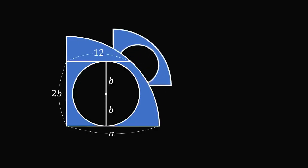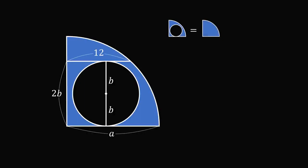We want to calculate the area that's shaded in blue, and that will be equal to the area of the quarter circle minus the area of the small circle. This is equal to pi a squared over 4 minus pi b squared. Factoring out pi gives pi multiplied by the quantity a squared over 4 minus b squared.